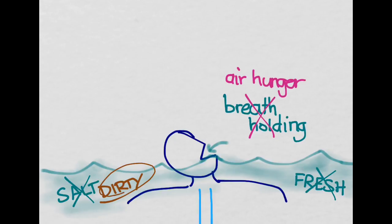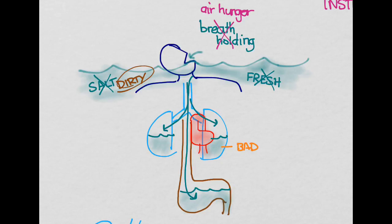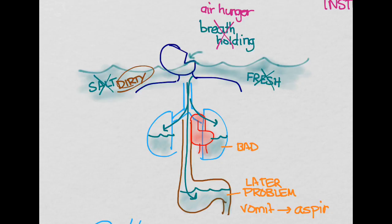Most of the water you swallow is actually going to go into your stomach, and that's not such a big deal — after all, we drink water all the time. It's the water that you aspirate into your lungs that could be a big problem. That said, the water in your stomach is not necessarily harmless later, since most patients whose stomach is full of water are going to vomit at some point. If they're unconscious when they vomit, they'll aspirate it — so that's why the water in the stomach can also be a problem.